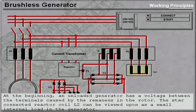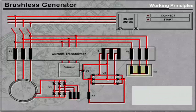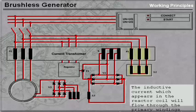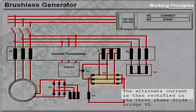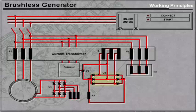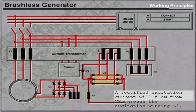The voltage between the terminals is caused by the remnants in the rotor. The star-connected reactor coil L2 can be viewed upon as a small internal load in the generator. The inductive current which appears in the reactor coil will flow through the primary windings P1. This current induces a current in the secondary windings S. The alternate current is then rectified in the three-phase diode bridge V2.